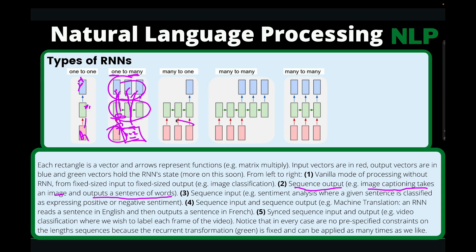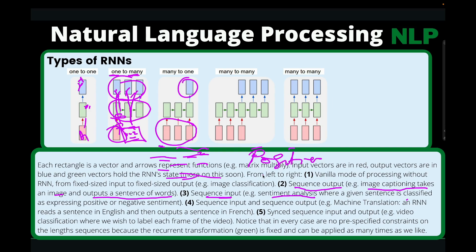It's also possible that you get several inputs and then just one output. For instance, sentiment analysis, where a given sentence is classified as expressing positive or negative sentiment. Someone might watch a movie and write a long review. Those are many sentences, but we want to predict whether the sentiment is positive or negative. So, several sentences but just one output — that is many-to-one.